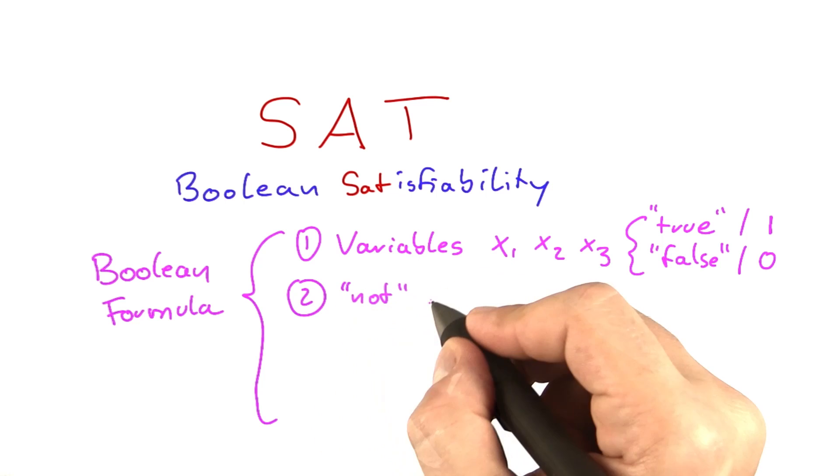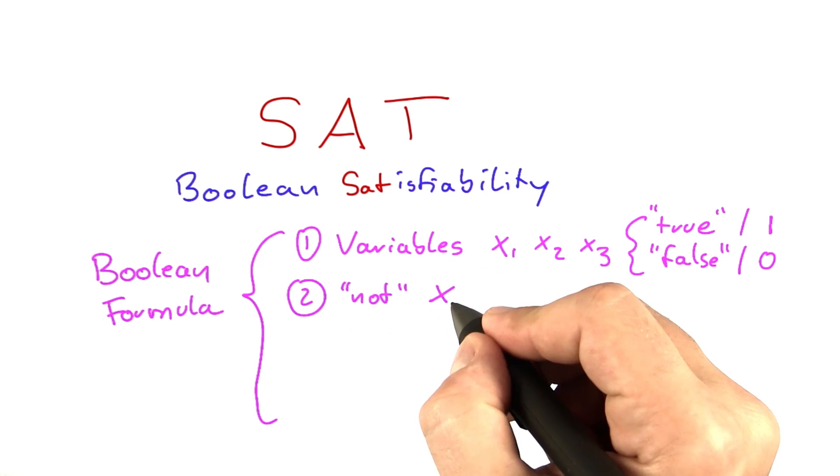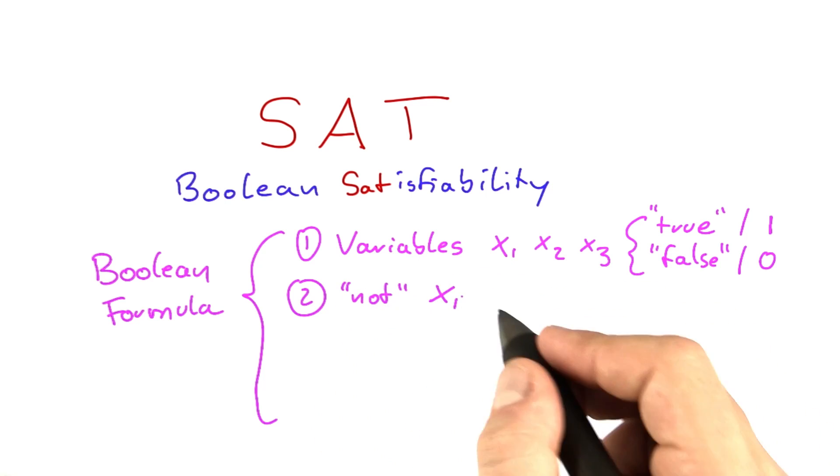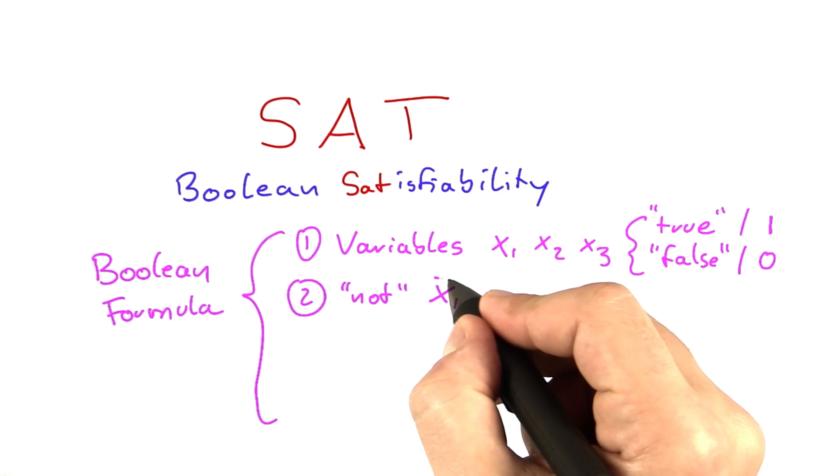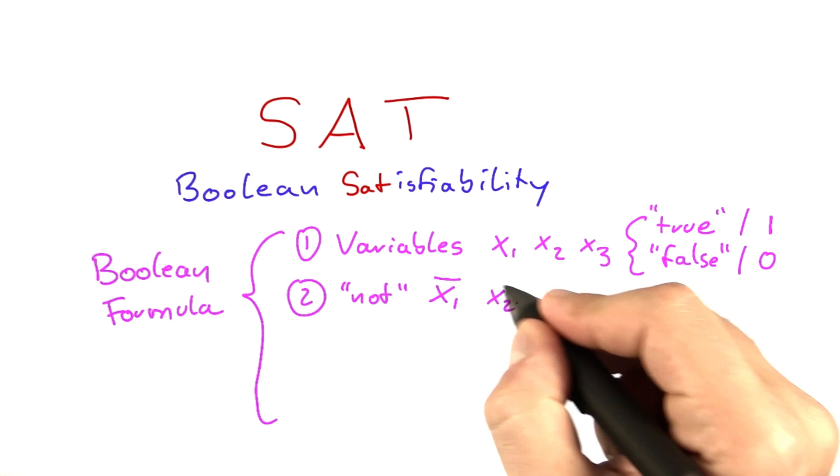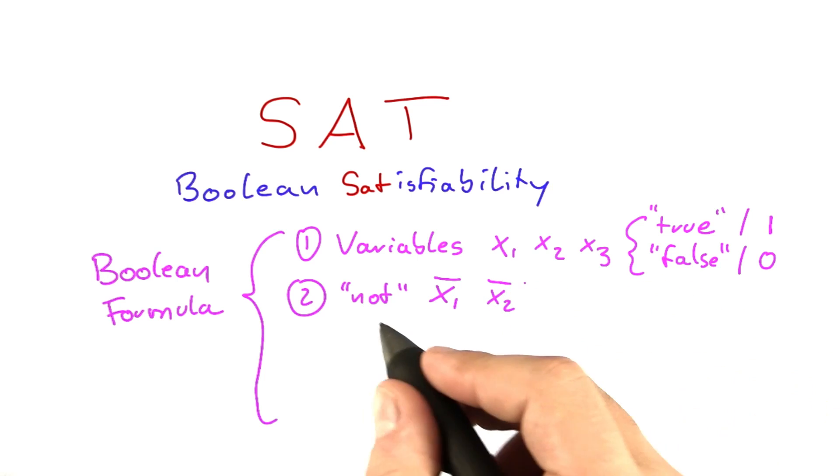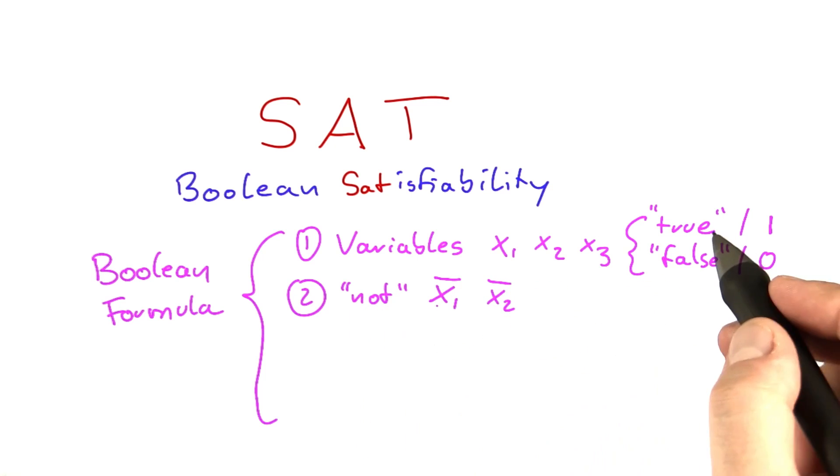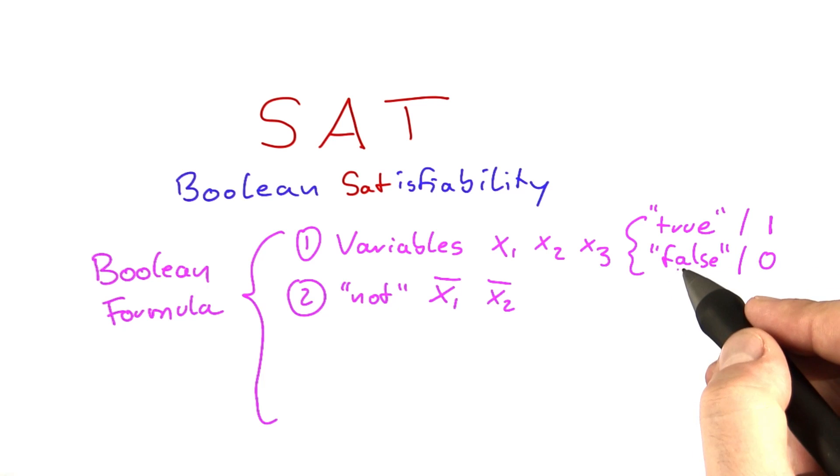The second thing you can have in a Boolean formula is an operator called not. How you write that is, if you have a variable x1, then this here would be not x1. Or if you have x2, this would be not x2. What the not does is it turns a true into a false and vice versa, so it also turns a false into a true.